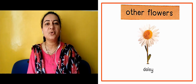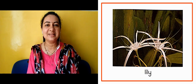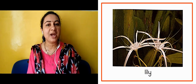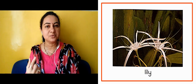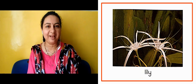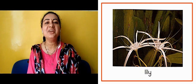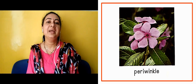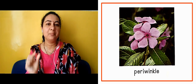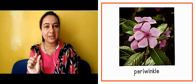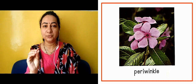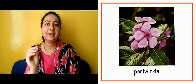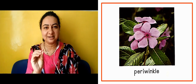Now the next slide is showing us lily. This is lily, this is a flower garland. The next slide is showing us a periwinkle. This flower is very small and it's a little bit of a pink violet-like color.